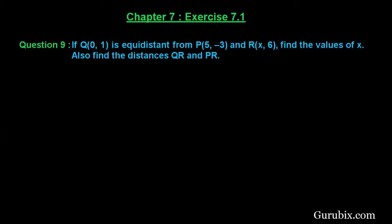Welcome friends. Let us solve question number 9 of Exercise 7.1 of Chapter 7. The question says: if Q, whose coordinates are (0, 1), is equidistant from point P, whose coordinates are (5, -3), and point R, whose coordinates are (x, 6), find the value of x and also find the distances between Q and R, and P and R.